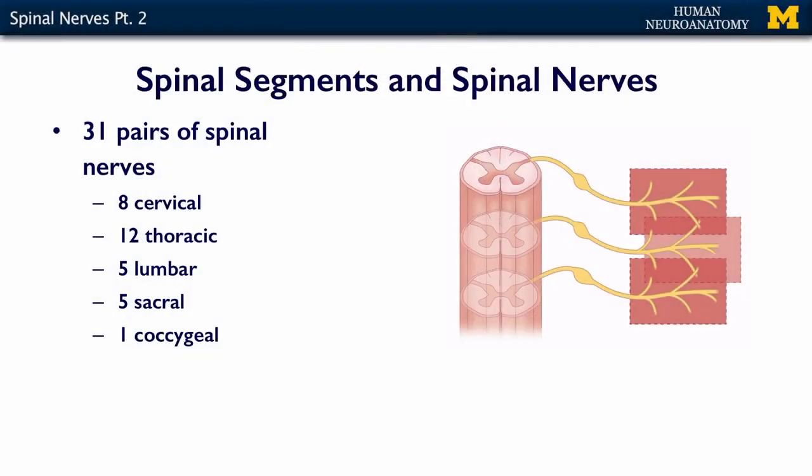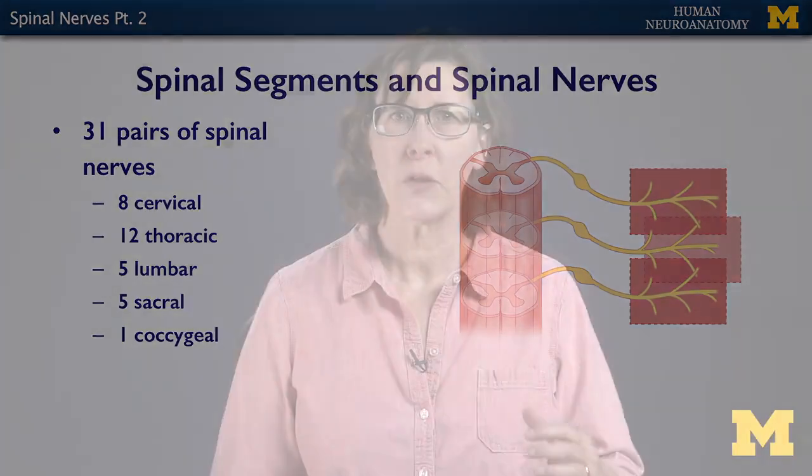We'll talk about the plexuses in a separate lecture called Peripheral Nerves 2. With regard to your spinal nerves, you have 31 pairs. These include 8 cervical, 12 thoracic, 5 lumbar, 5 sacral, and 1 coccygeal — so 31 pairs of spinal nerves and 31 spinal segments.